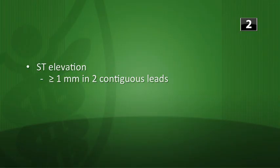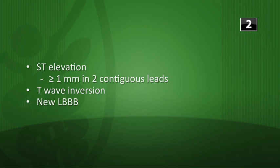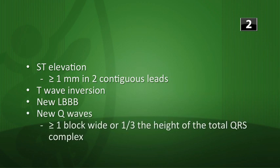Next: what are the major ECG changes seen with a myocardial infarction? You can see ST segment elevation of at least one millimeter in two contiguous leads, T wave inversion, a new left bundle branch block, and new Q waves that are at least one block wide or a third of the height of the total QRS complex. Remember, you only see these changes about 50% of the time during an MI, so a normal ECG does not rule out an MI.